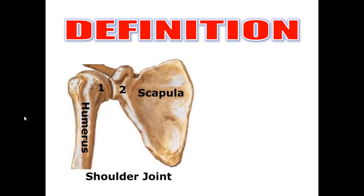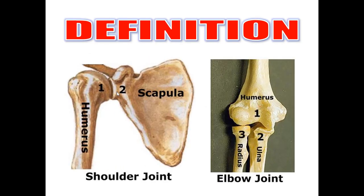We'll start by the definition of the joint. The joint is the meeting between two bones or more than two bones. Two bones, like the shoulder joint between the humerus and the scapula. Three bones, like the elbow joint between the humerus, radius, and ulna, or the knee joint between the femur, tibia, and patella.